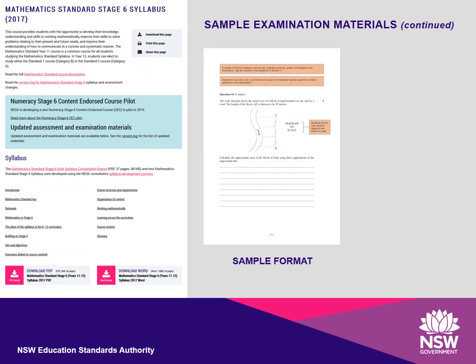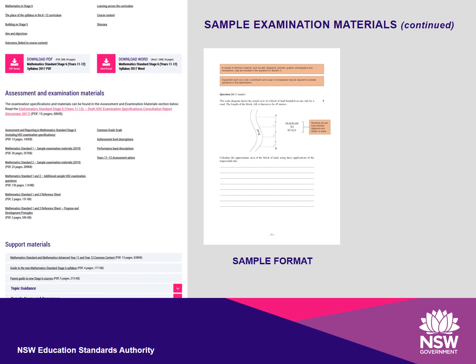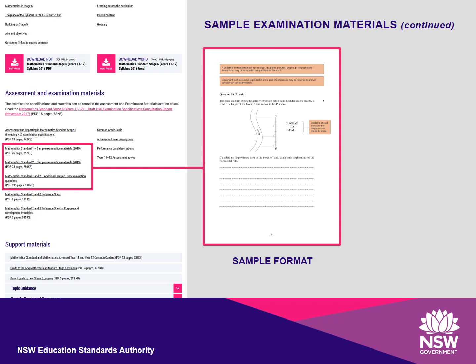The mark allocations and spaces provided to answer questions will be appropriate for the anticipated range of responses. The exam committee determines the number of lines according to the amount of working space required for a typical student response. The number of lines is not standardised — for example, not all three-mark questions will have the same number of lines. It is also important to note that students' responses are not limited by the number of lines provided.